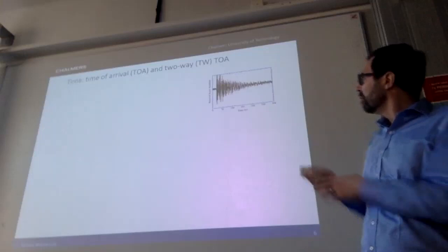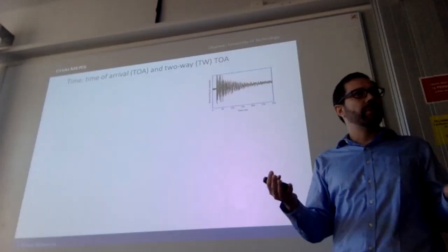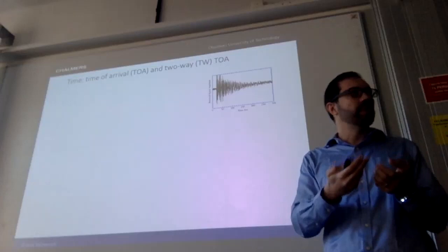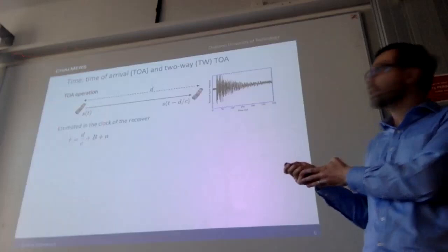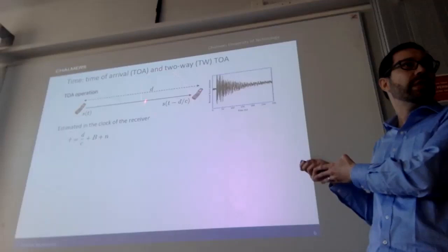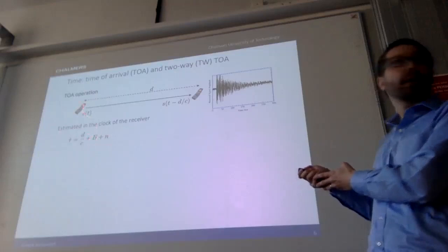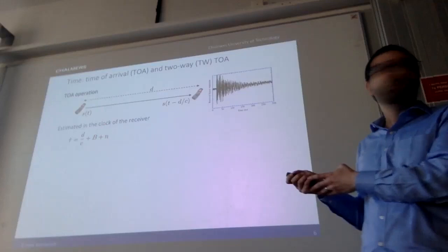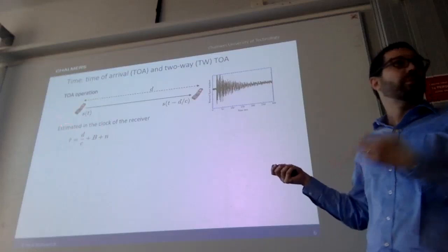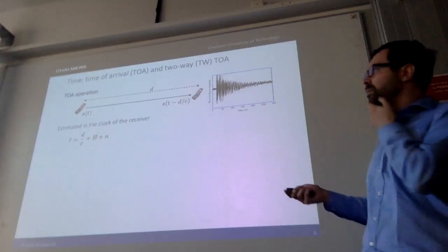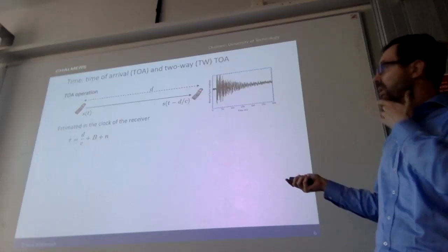This picture shows a waveform at very high bandwidth sampled by a receiver. You can see multi-paths — the line-of-sight path and others — which in principle tell you something about distance. A transmitter sends a signal s, which propagates over some distance to the receiver, and the receiver receives a delayed version. The receiver estimates the time of arrival of the first path, giving an estimate equal to distance divided by the speed of light, plus an unknown clock bias, plus noise.